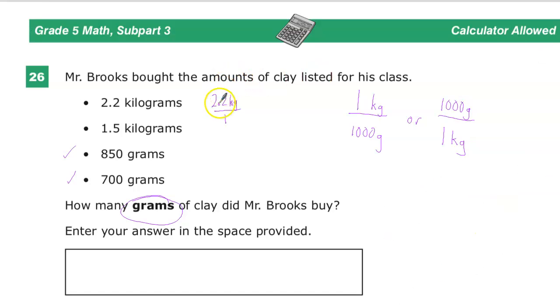So since I made 2.2 kilograms over 1, why is it over 1? Because anything is a fraction over 1 as long as it's a more of a traditional number, any integer.